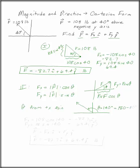Once you do that, you can say Fx is 108 times cosine of 140. And Fy is 108 sine 140.